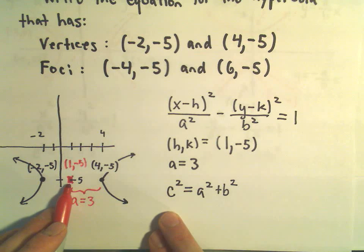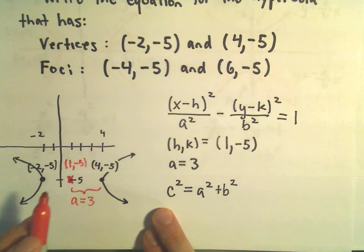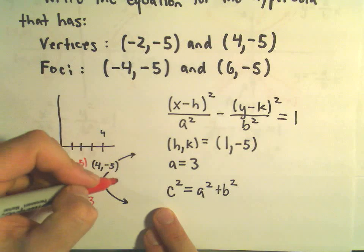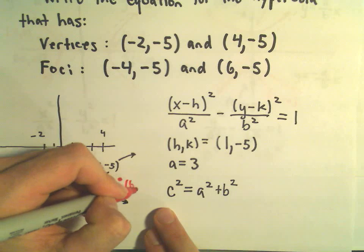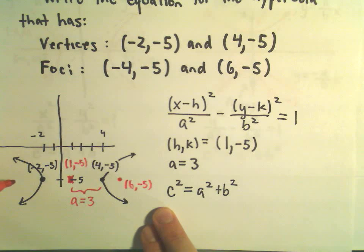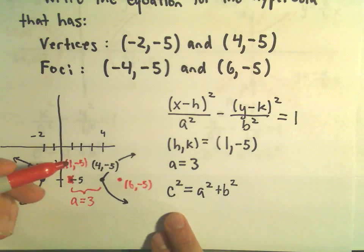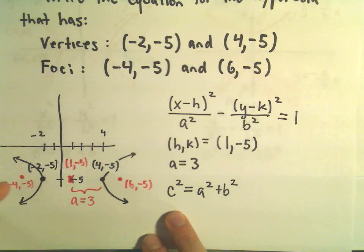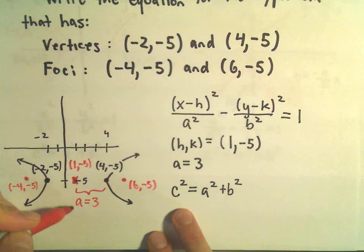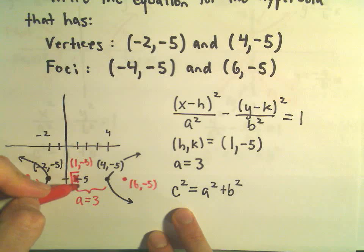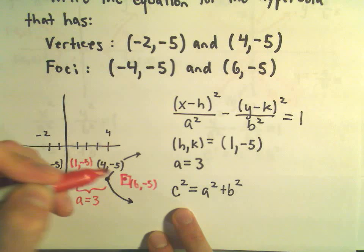So, the foci, we haven't put those in there yet. But one of our foci was over here at (6, -5). The other one we said was at (-4, -5). So, (-4, -5). So, likewise,